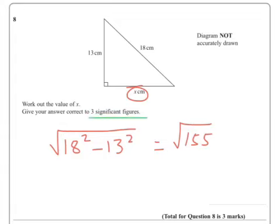It says give your answer to three significant figures. Now the answer came out as 12.4498996. Three significant figures says round at this point so therefore it should be 12.4.